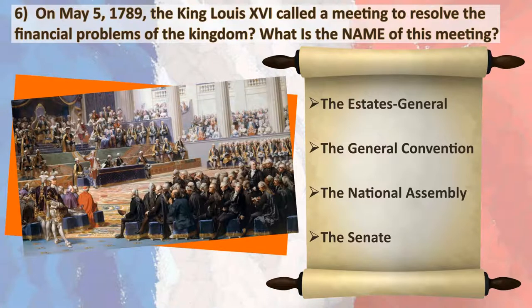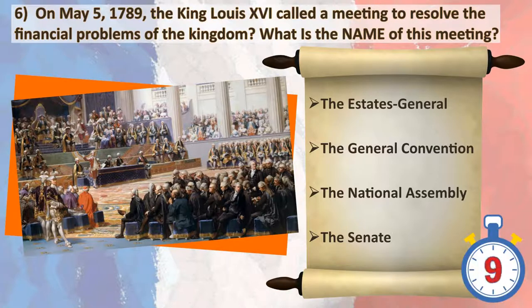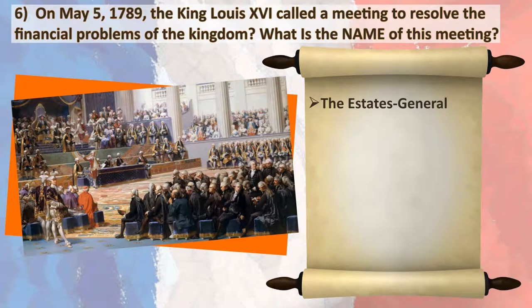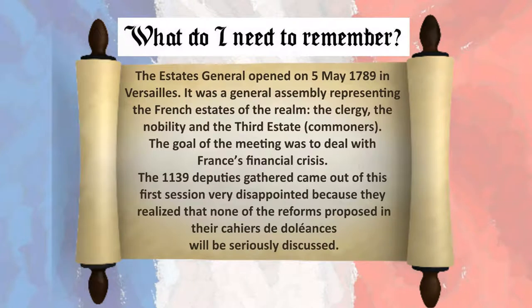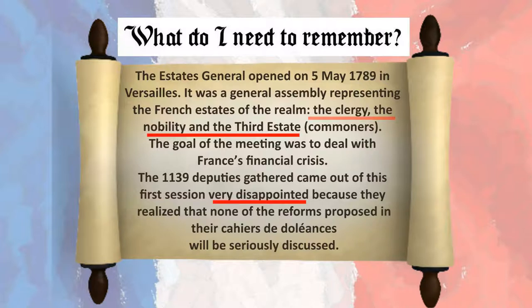King Louis XVI called a meeting to resolve the financial problems of the kingdom. The Estates General opened on 5 May 1789 in Versailles. It was a general assembly representing the French estates of the realm: the clergy, the nobility, and the third estate commoners. The goal of the meeting was to deal with France's financial crisis. The 1,139 deputies gathered came out of this first session very disappointed, because they realized that none of the reforms proposed in their cahiers de doléances would be seriously discussed.